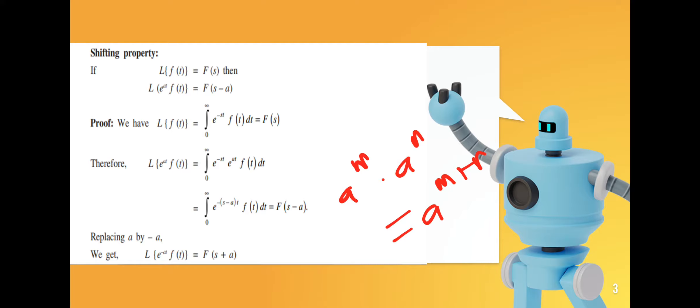Comparing this with the original: the integral from 0 to infinity of e^(-st) f(t) dt equals F(s). If we replace s with s minus a, we get F(s minus a). Therefore, the Laplace transform of e^(at) f(t) equals F(s minus a).